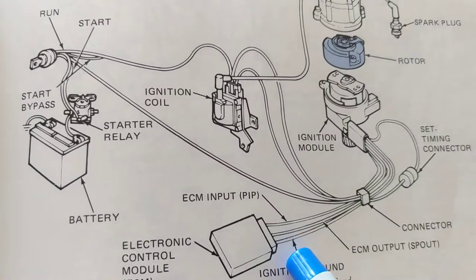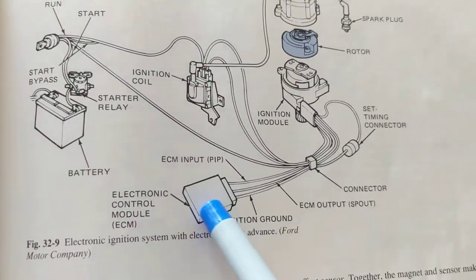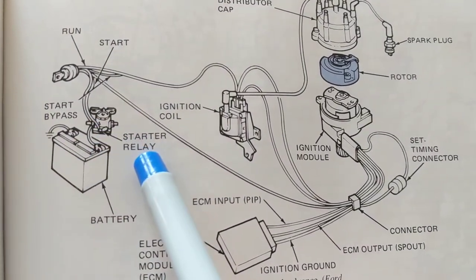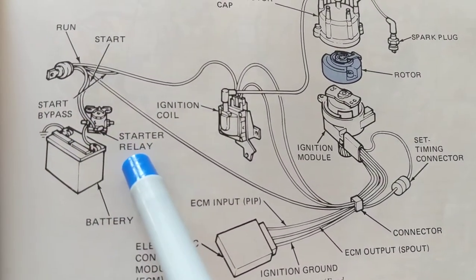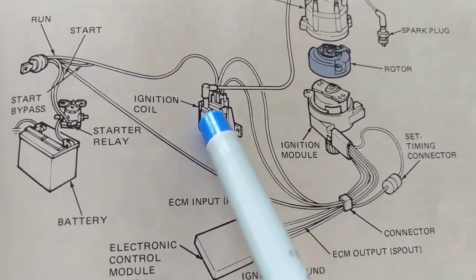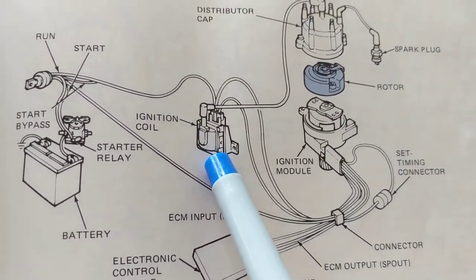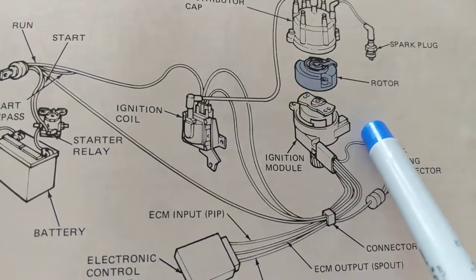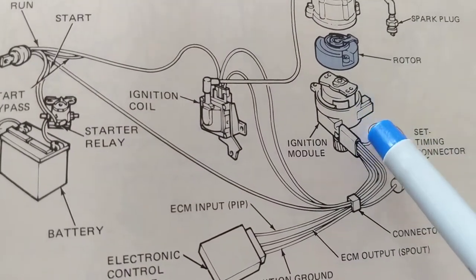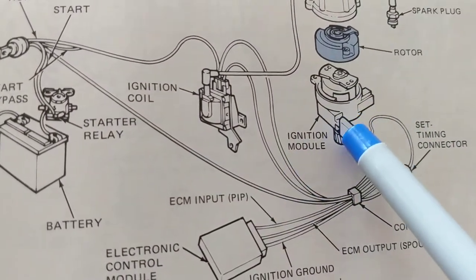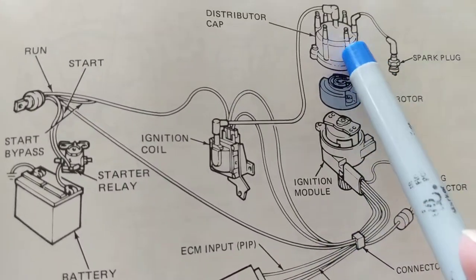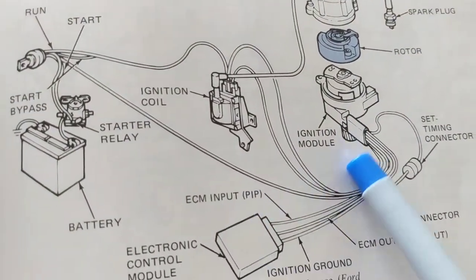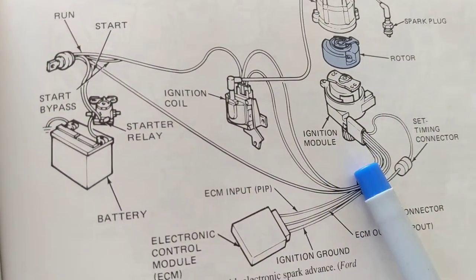Now let's move to something more electronic. We're taking away the contact points from the distributor and replacing them with the computer. The same thing applies: go to the starter relay, start the motor, then in the run position go through the ignition coil — same theory. We still have a distributor, but now what fires the spark on and off is the computer — it's being done electronically.